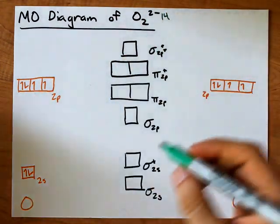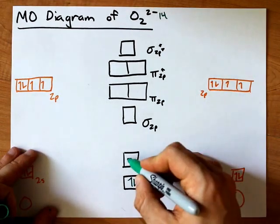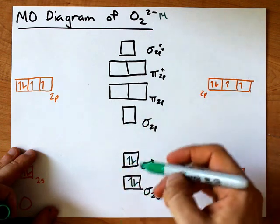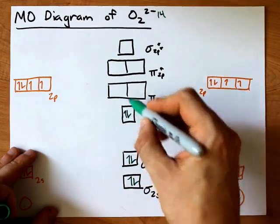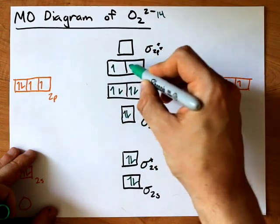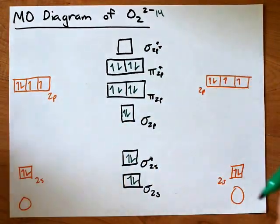Speaking of which, 14 electrons. Let's go bottom up. Thank you, Aufbau. And let's spread them up before we double them up. Thank you, Hund. 2, 4, 5, 6, 7, 8, 9, 10, 11, 12, 13, 14. That's 14 electrons.